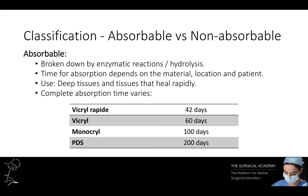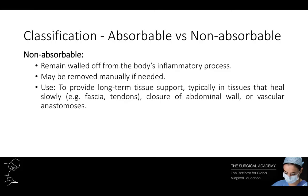The complete absorption time varies. Non-absorbable sutures are used to provide long-term tissue support. They remain walled off by the body's inflammatory processes until removed manually if needed. Uses include tissues that heal slowly — for example, fascia, tendons, when closing the abdominal wall, or for vascular anastomosis.